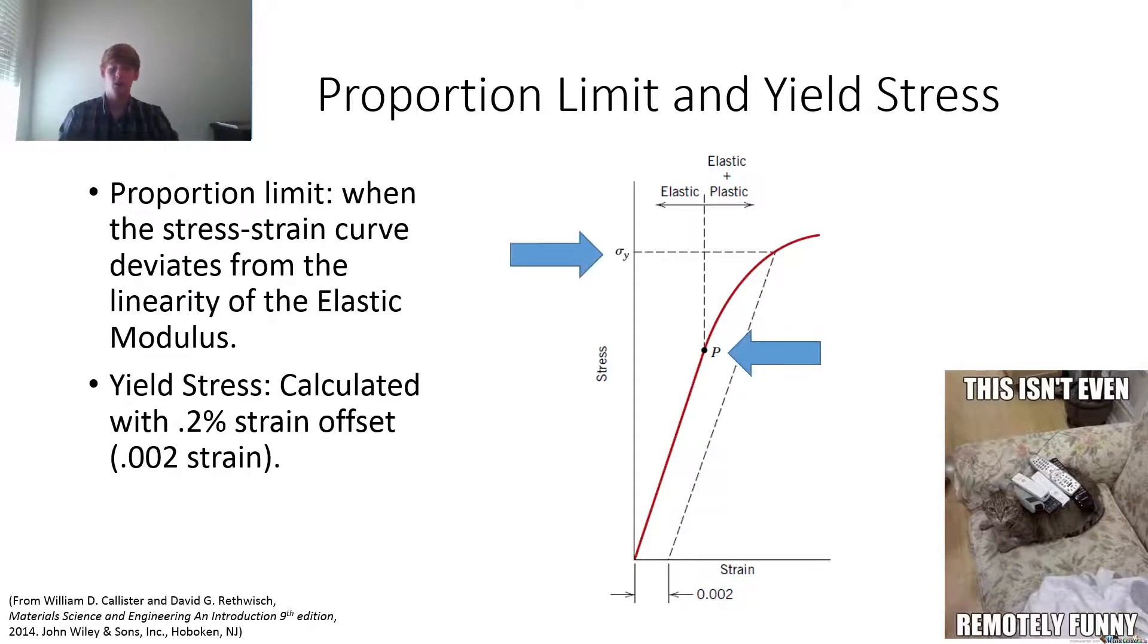It's important to know that anything to the left of the proportion limit, or in most cases the yield point, it's elastic deformation, which means instead of bonds breaking, the atomic bonds between atoms is just stretching. They're not actually rupturing or sliding or anything like that. Whereas to the right of it, it's plastic deformation, which means at some point because of how much force is being applied to it, it's too strong and it breaks these atoms and they slide and then they recombine. So keep in mind, to the left is elastic, to the right is elastic and plastic deformation.